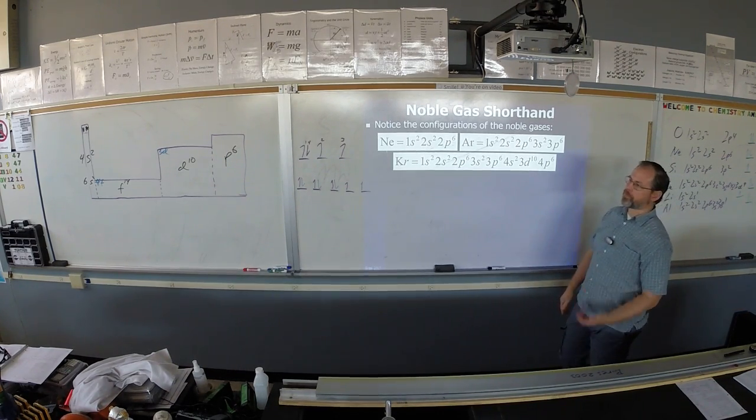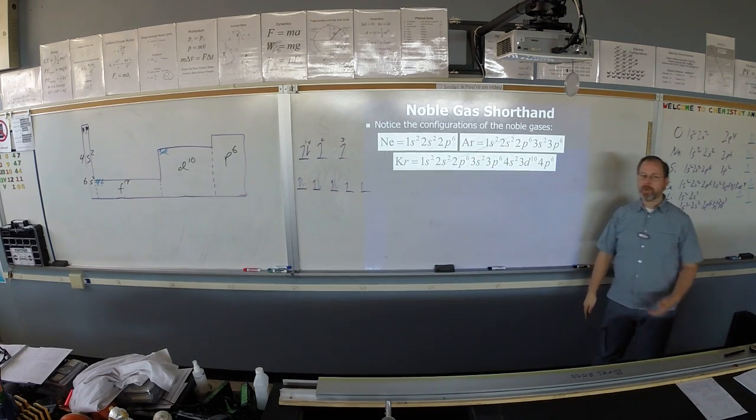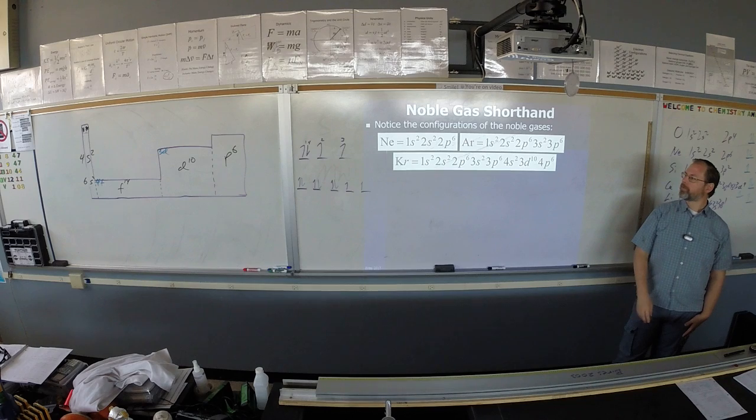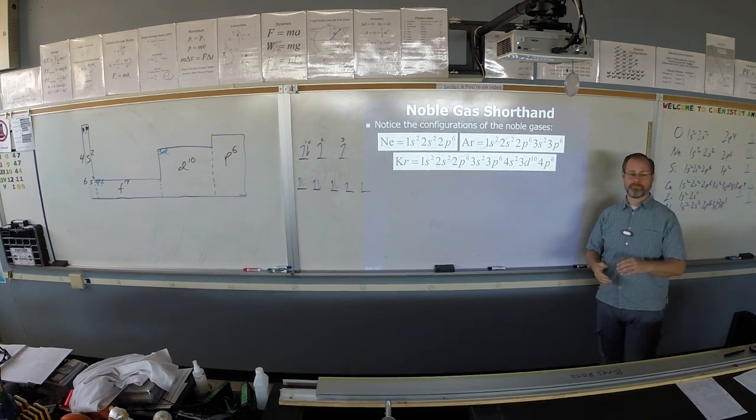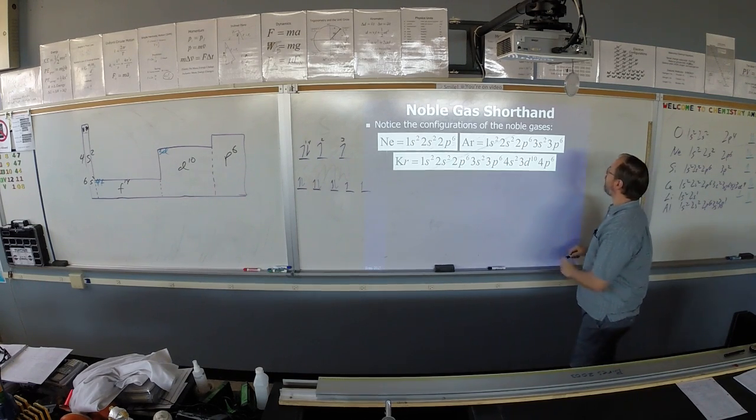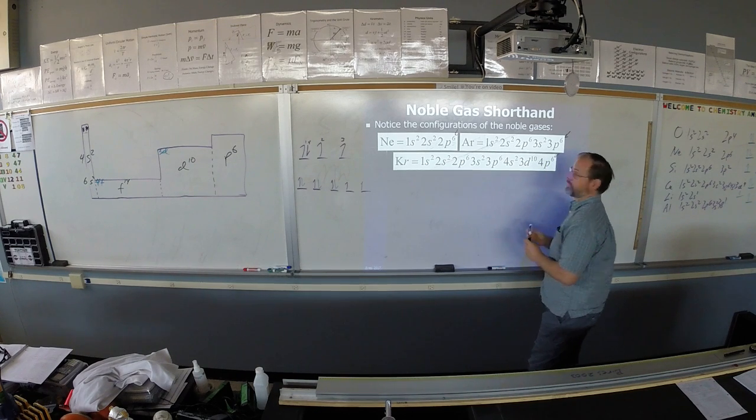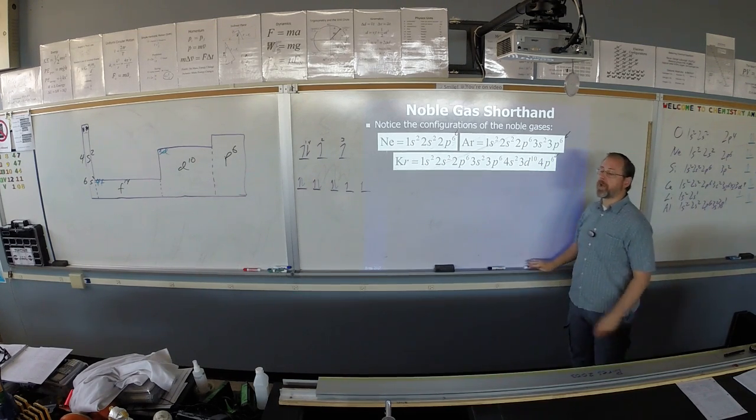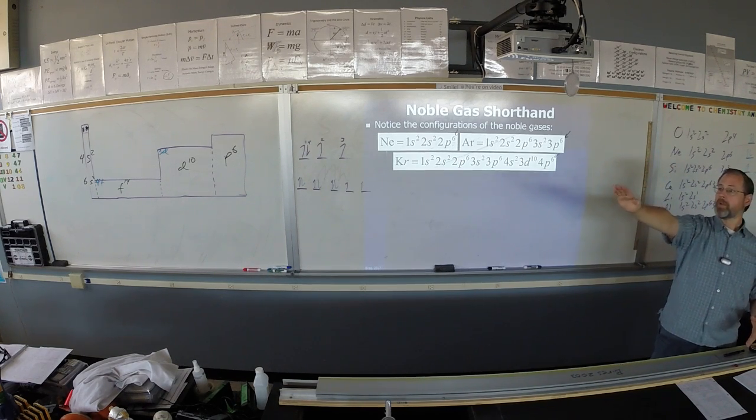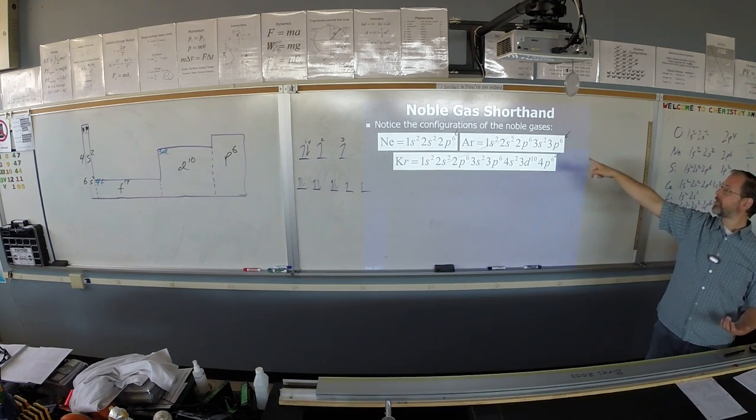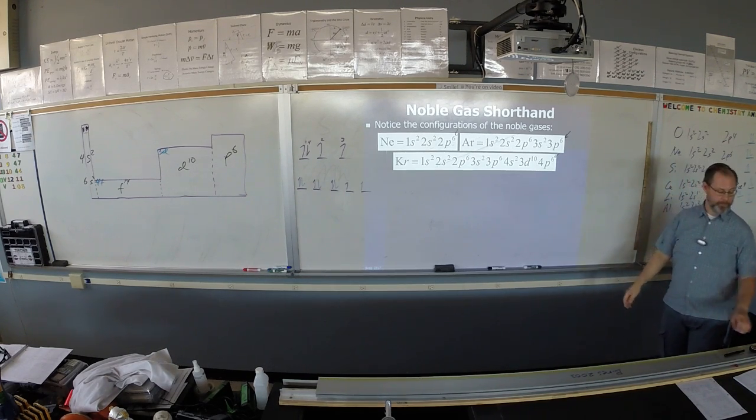So that's how noble gas configuration works. These are the configurations for the noble gases - at least the first few: neon, argon, and krypton. What do you notice first of all about the noble gases and their configuration? Exactly, they all end p6. That's not a coincidence. We arrange the periodic table so we end at the p block, so they all end p6.